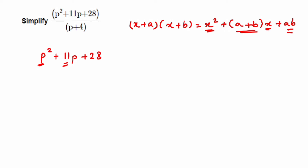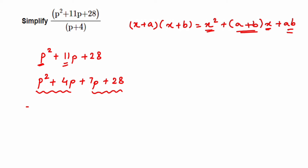Now I split the middle term 11p using 4 and 7, writing the expression as p² + 4p + 7p + 28. I group the first two terms and the last two terms. In the first group, p² and 4p have p as a common factor, so taking p out gives p(p + 4).